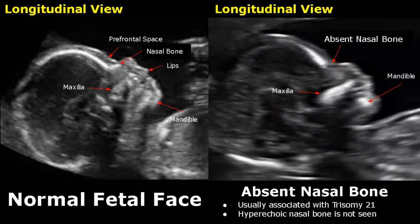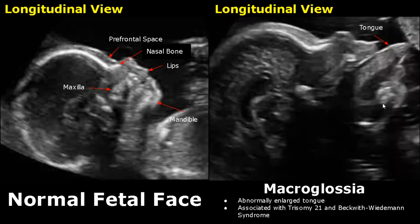Absent nasal bone is usually associated with Trisomy 21. The hyperechoic nasal bone is not seen in the abnormal image, whereas in the normal image we can see the hyperechoic nasal bone clearly. Macroglossia refers to an abnormally enlarged tongue, and it is associated with Trisomy 21 and Beckwith-Wiedemann syndrome.